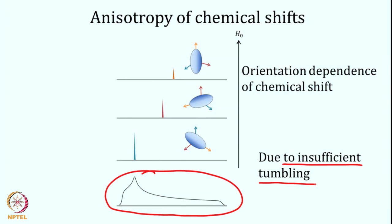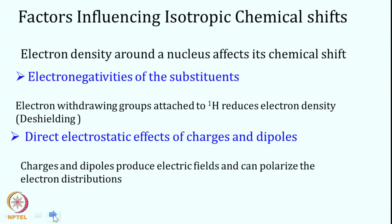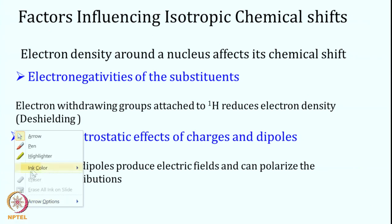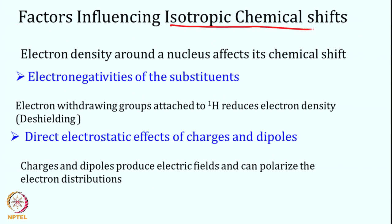Even in oriented liquid crystalline samples where there is incomplete tumbling, you get some anisotropy — orientation-dependent chemical shift — which is very much used in many experiments we will discuss later. Insufficient tumbling causes line broadening. The other type is isotropic chemical shift, where there is complete tumbling giving a sharp line. Isotropic means no orientation dependence in the chemical shift.